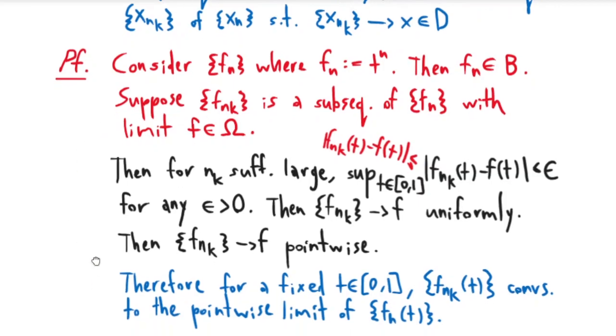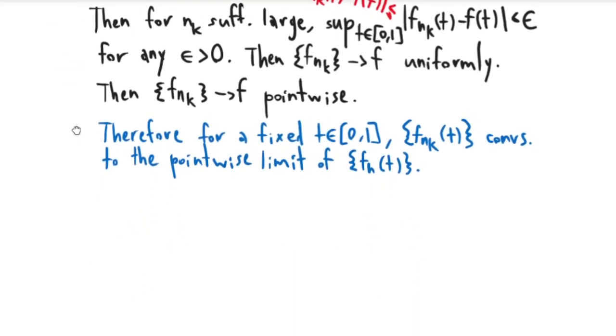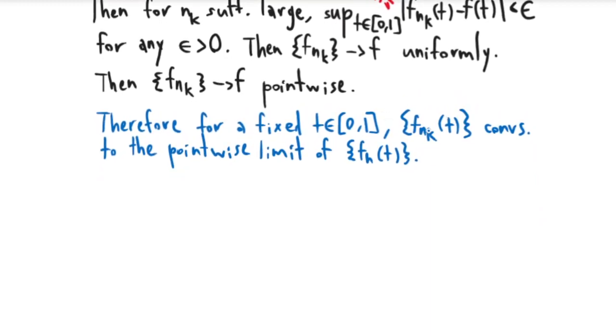This is because f_{n_k}(t) for a fixed t is just a subsequence of the sequence f_n(t), so whatever it converges to is going to be the same as whatever the parent sequence converges to.